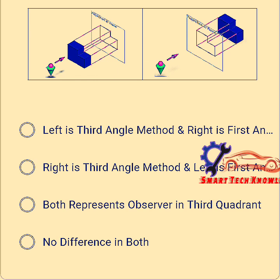For these two figures we need to identify the correct option. Here in the right-hand side figure, the position of observer and object, and on the left-hand figure, if you compare, the left-hand side figure represents first angle method while right-hand figure represents the position of observer, object, and plane in third angle. So the correct answer is option B.